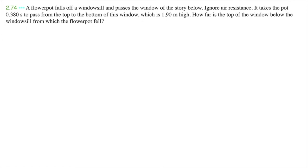A flower pot falls off a windowsill and passes the window of the story below. Ignore air resistance. It takes the pot 0.380 seconds to pass from the top to the bottom of this window, which is 1.90 meters high. How far is the top of the window below the windowsill from which the flower pot fell?